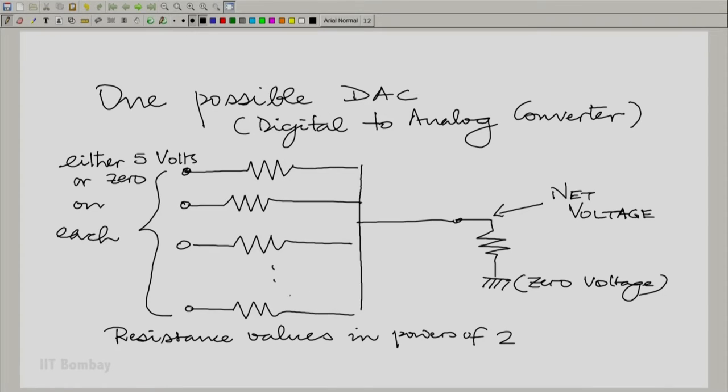You could take these resistance values in powers of 2. For example, if you had just 4 of them, you could make the resistance values some R0, 2 times R0, 4 times R0 and 8 times R0 and this is RL here. Just to take an example, these R0 values could be in kilo ohms. So R0 could be 1 kilo ohm, 2 kilo ohms, 4 kilo ohms and 8 kilo ohms and RL could be maybe 5 kilo ohms or 10, depends on what kind of currents we are willing to bear.